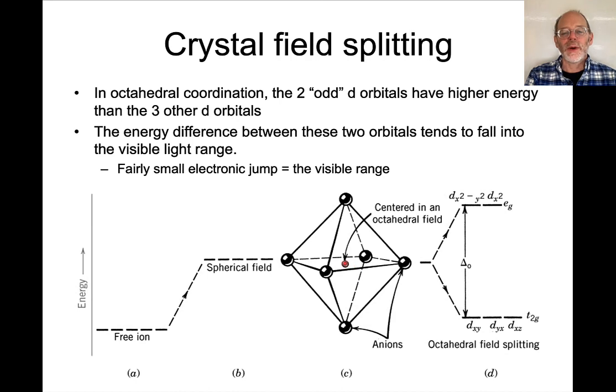they actually split their energies such that the orbitals where the electrons are pointing towards the oxygens have a higher energy, and the orbitals where the electrons point in between the oxygen atoms have a lower energy.